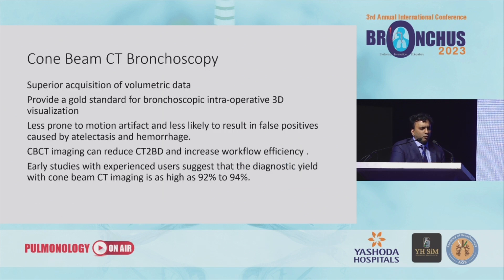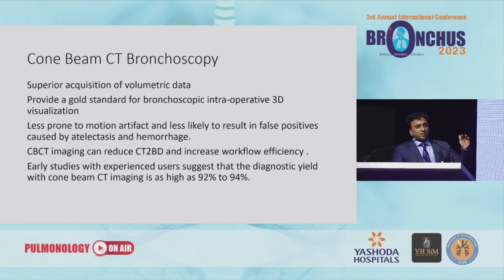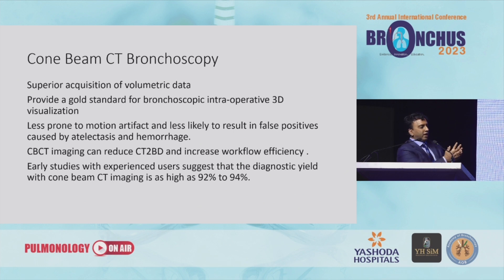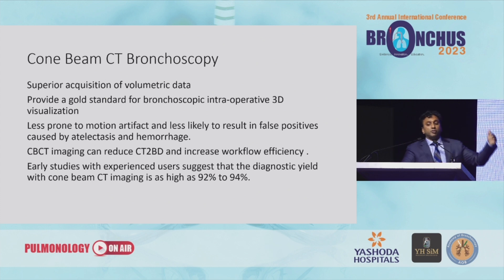Digital tomosynthesis is kind of 2D and a half — it's not quite applicable to every single lung nodule. Currently, the gold standard is cone beam CT bronchoscopy. With digital tomosynthesis you stack 2D images, but with cone beam, you have an actual cone of radiation that goes to a flat panel detector, spinning around the patient 270 degrees, creating images comparable to a multi-detector CT scan. It's less prone to motion artifact because you do the spin in five to eight seconds. Early diagnostic yield is somewhere between 92% and 94%, and now the literature is actually showing that.